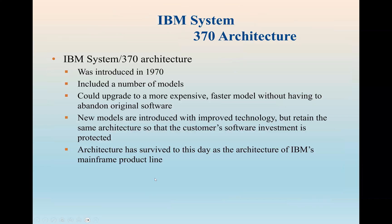An organizational decision may be based on the anticipated frequency of use of the multiply instruction, the relative speed of the two approaches, the cost, and the physical size of a special multiply unit. A prominent example of both of these phenomena is the IBM System 370 architecture, introduced in 1970, which included a number of models. A customer with modest requirements could buy a cheaper, slower model, and if demand increased, later upgrade to a more expensive, faster model without having to abandon the software already developed.